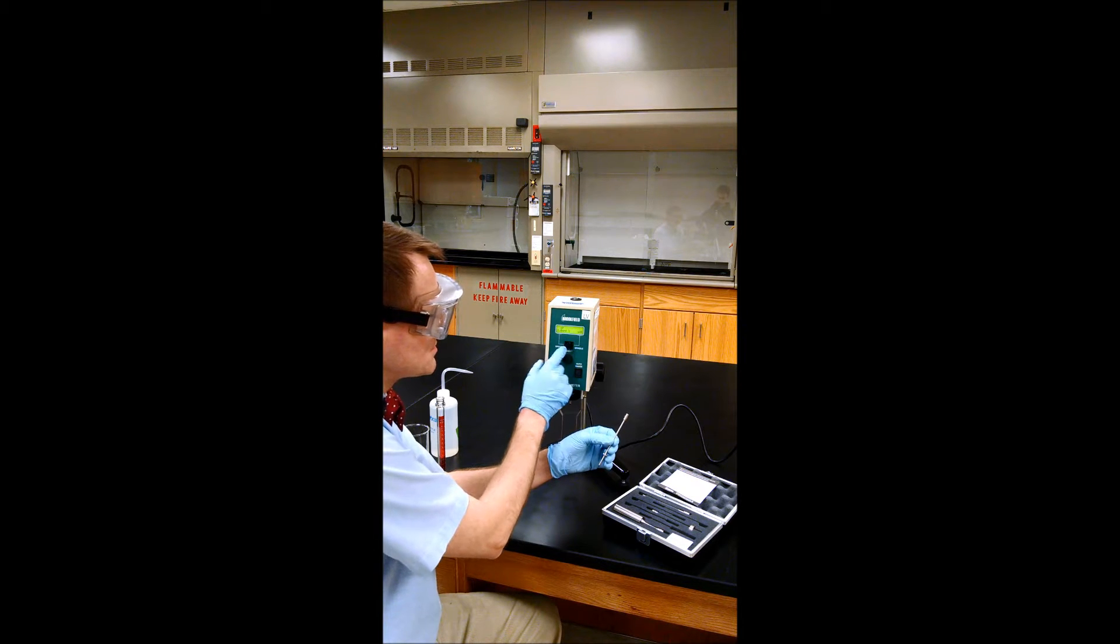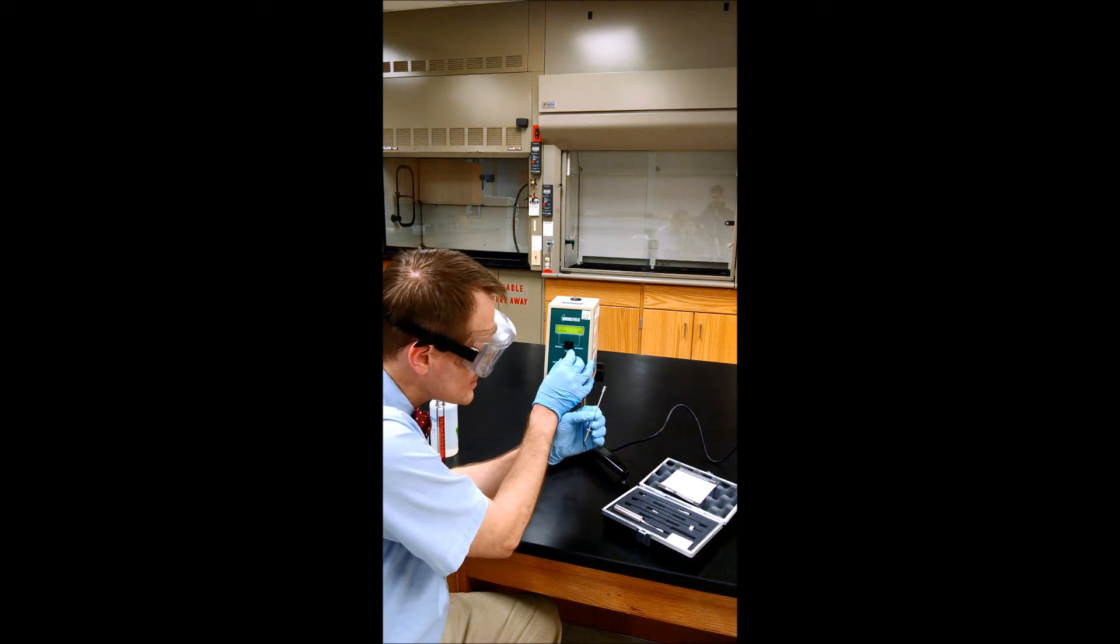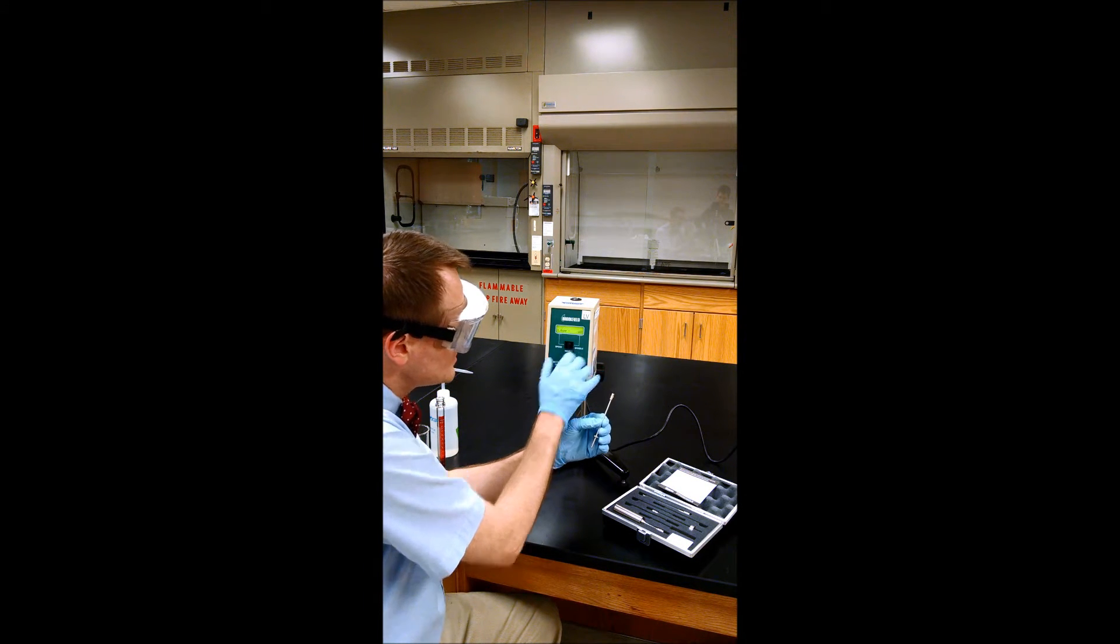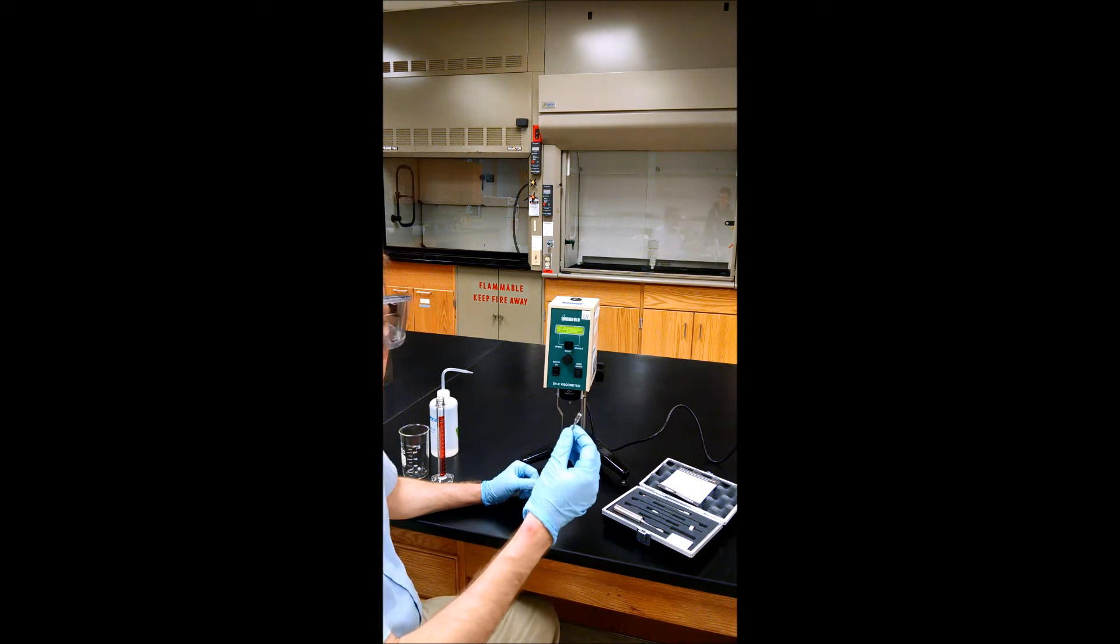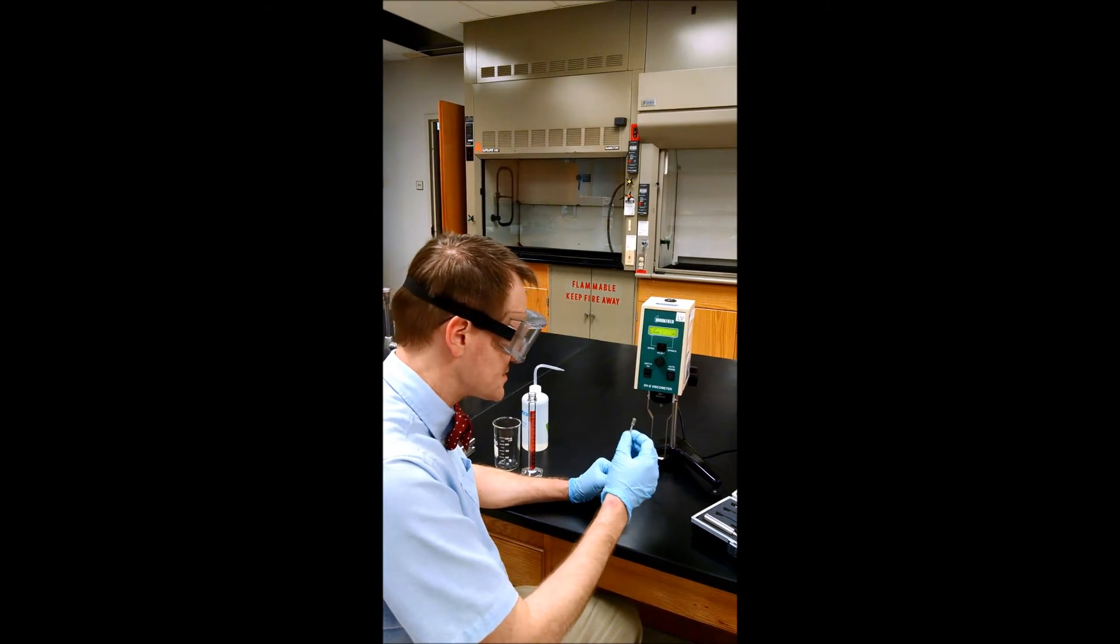Each spindle has a code and we can program in the code by switching to spindle and selecting the spindle number. This is spindle 63, so we dial up to our spindle number. To install the spindle, these are reverse threaded, so lefty tighty, reverse the normal way.